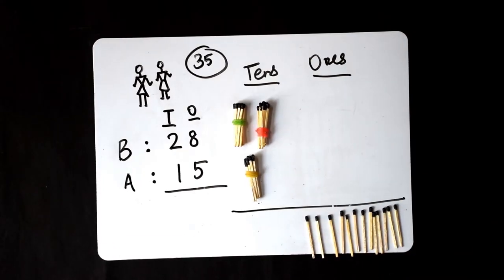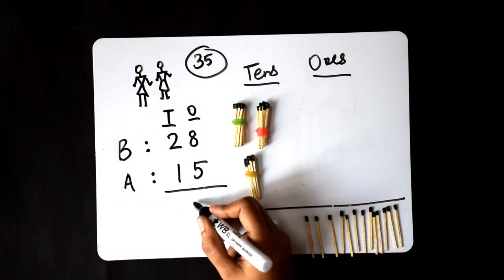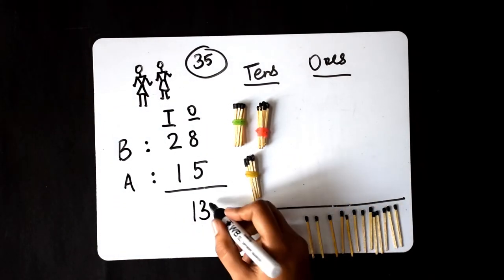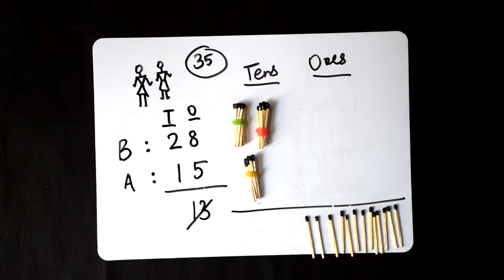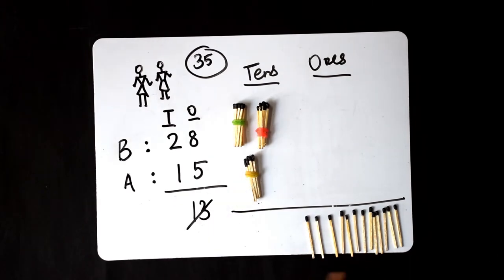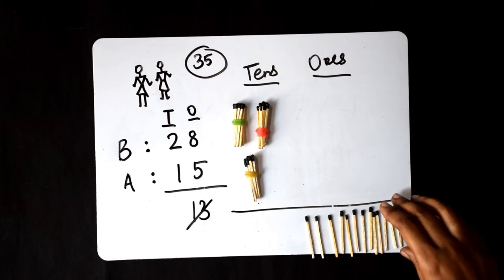Now, we have 13 ones. Can we write 13 here? No. We cannot write two digits in one place. Here, we see that there are more than 10 ones. So, can we take out 10 and bundle them up together? Let's take them out.